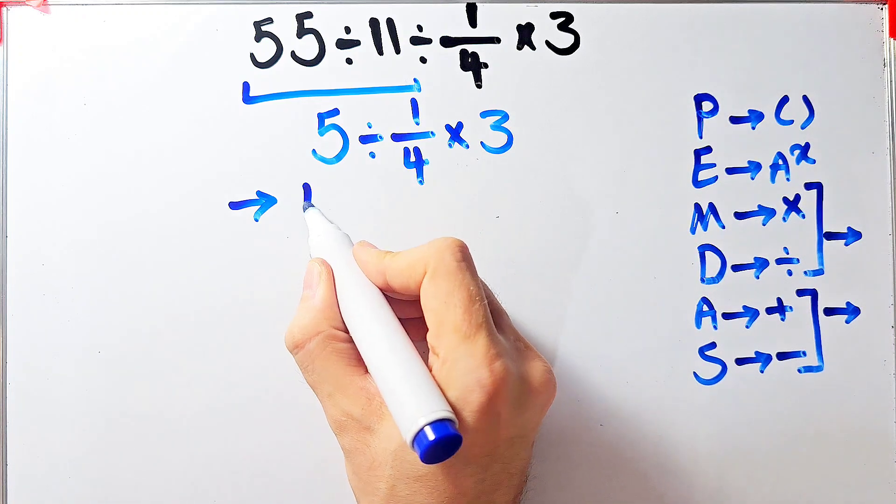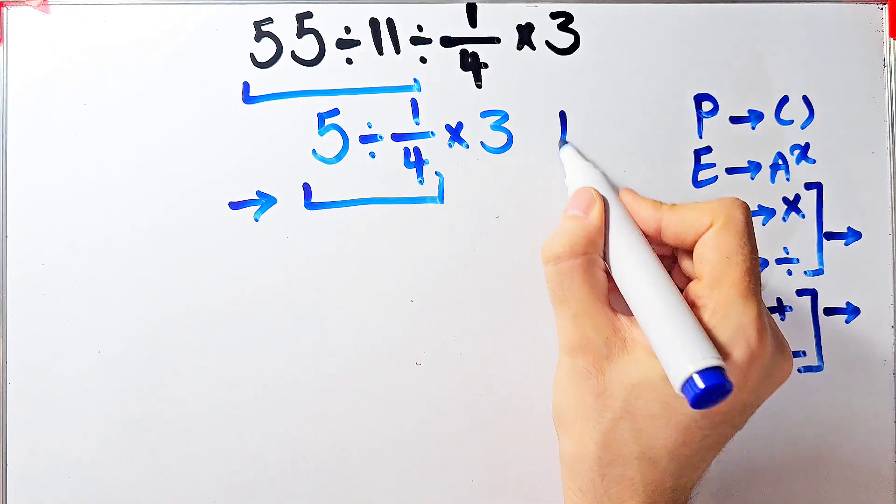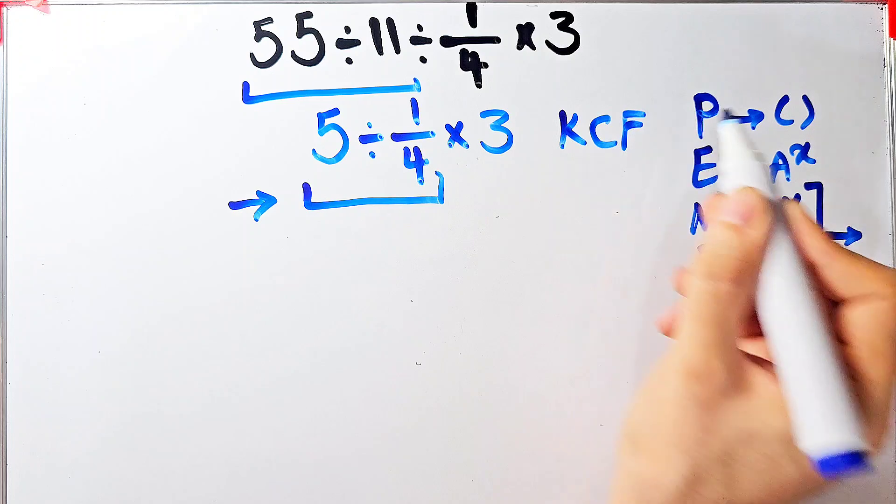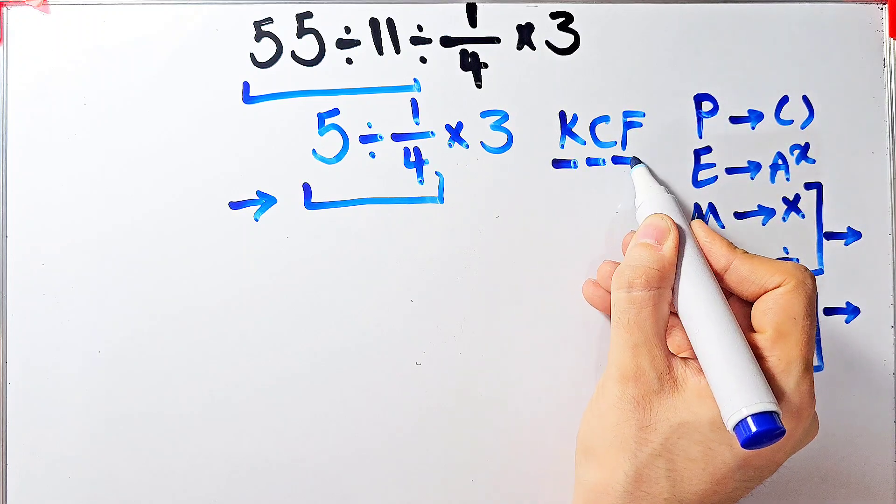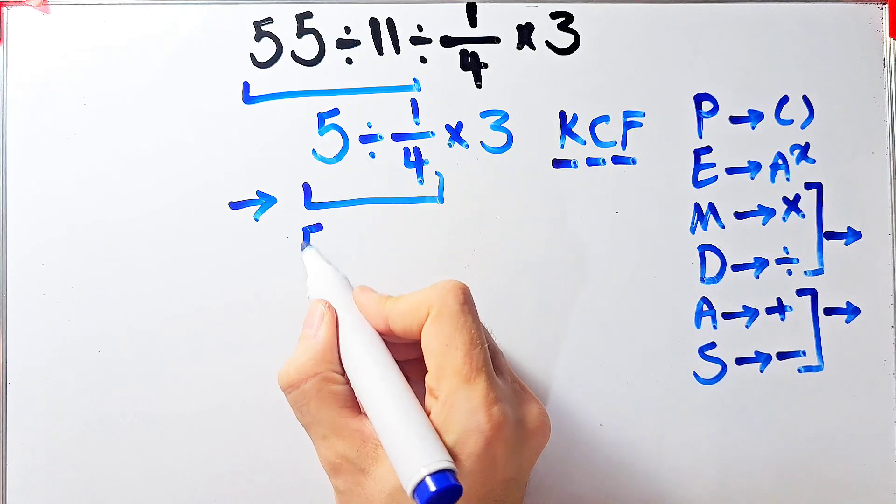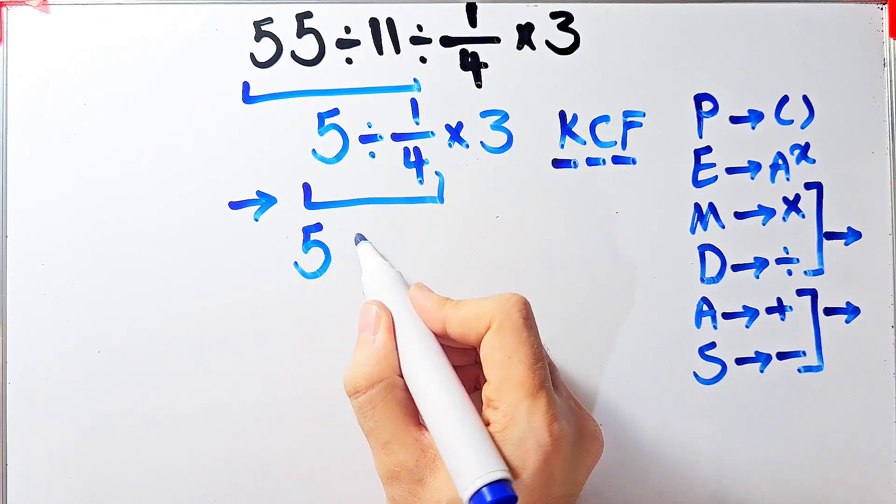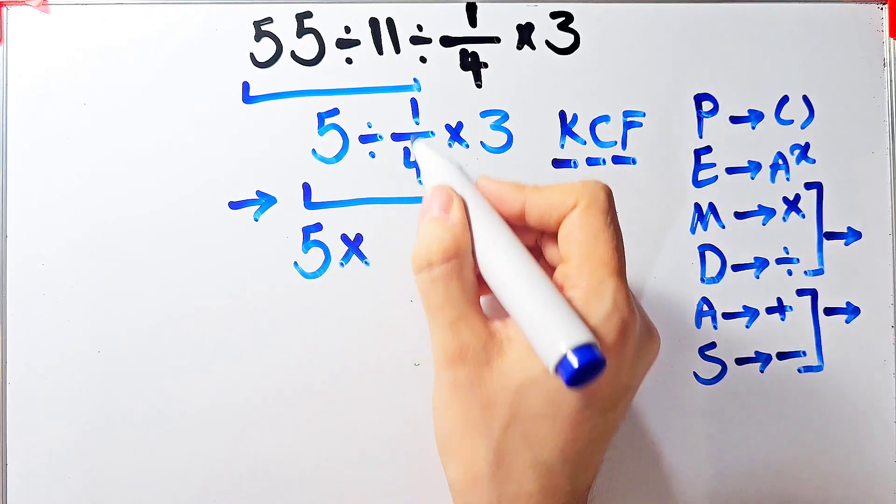In this rule, K stands for keep, C stands for change, and F stands for flip. We keep the first number as it is, then we change the sign, and after that we flip the second fraction.